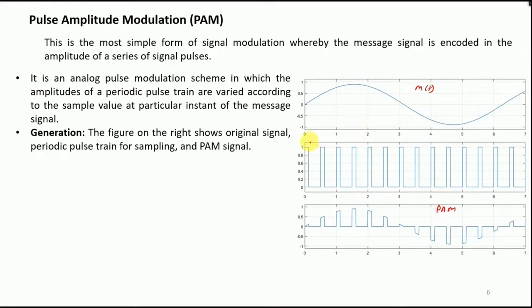So what we do is we generate an impulse train, multiply the message signal with that impulse train, and eventually we will reach here. In short, this is an analog pulse modulation scheme in which the amplitudes of a periodic pulse train are varied according to the sample values at particular instants of the message signal. So this means that the amplitude of this pulse train is varying with respect to the message signal and it is related over here.